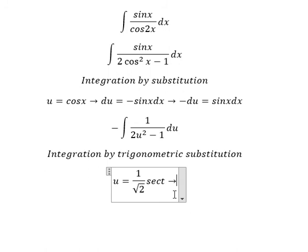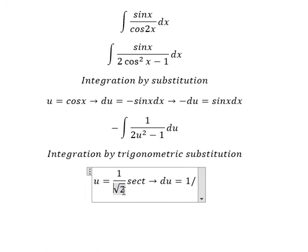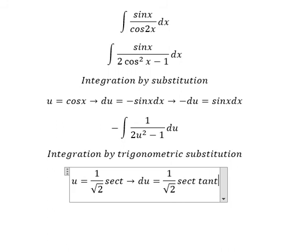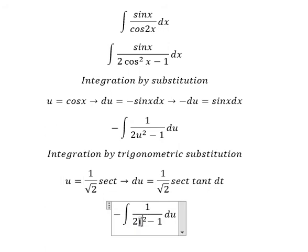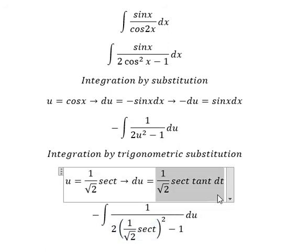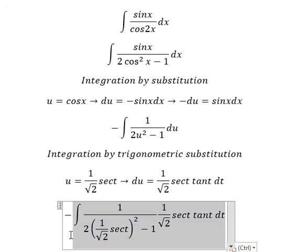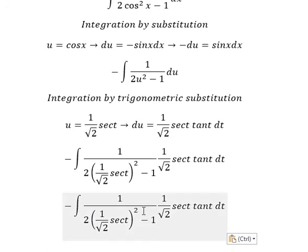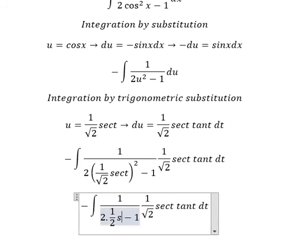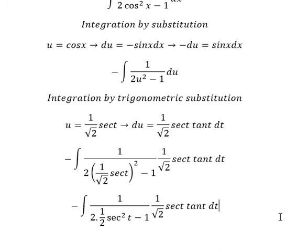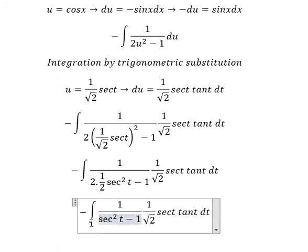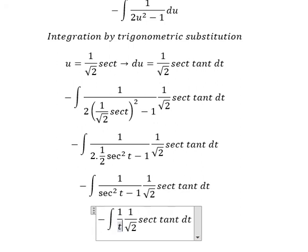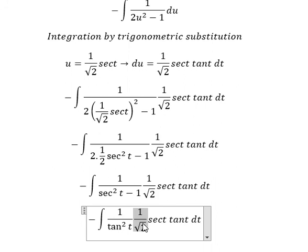We take the first derivative of both sides for du. We put this in, replacing du with this expression. This one we change for one over two secant squared t, divided by two. Secant squared t minus one we change for tan squared t, and this constant we can put outside.